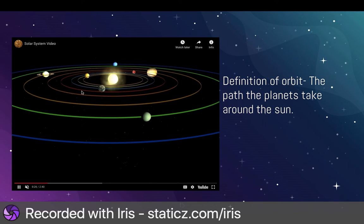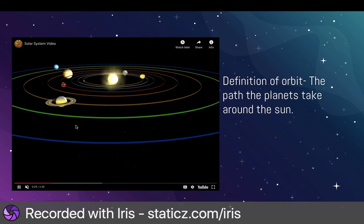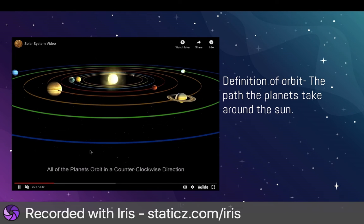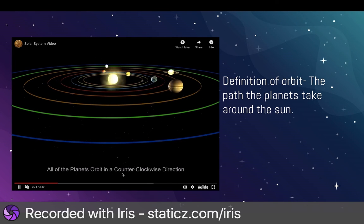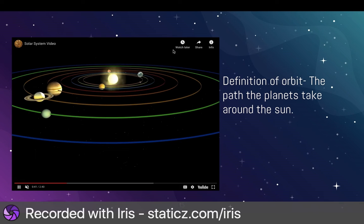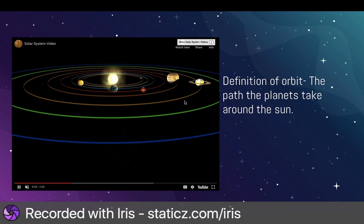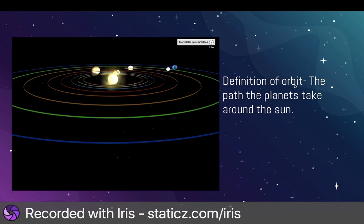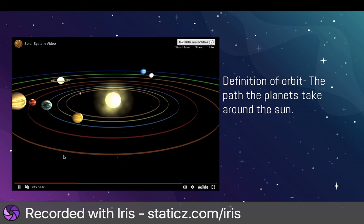This is sped up so we can see it. But here they are all orbiting in this direction. All of the planets orbit in a counterclockwise direction — this way, not this way. They all go to the left, around the sun. They orbit around the sun.